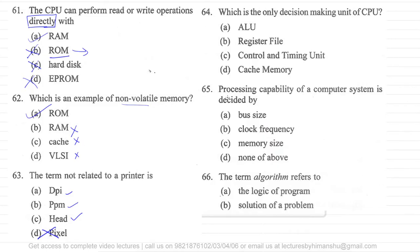Which is the only decision-making unit of CPU? There is only one decision-making unit and that unit is called the arithmetic and logical unit, ALU. Cache memory, you cannot make decisions. Register file, you cannot make decisions. Now there are two things that are left: ALU and control and timing unit. This control and timing unit is used to synchronize between different parts or components of the computer.